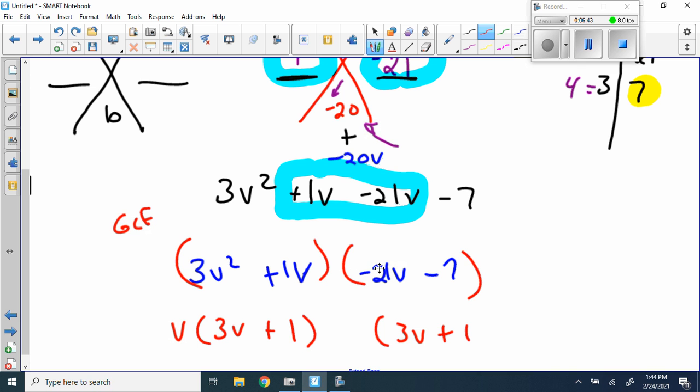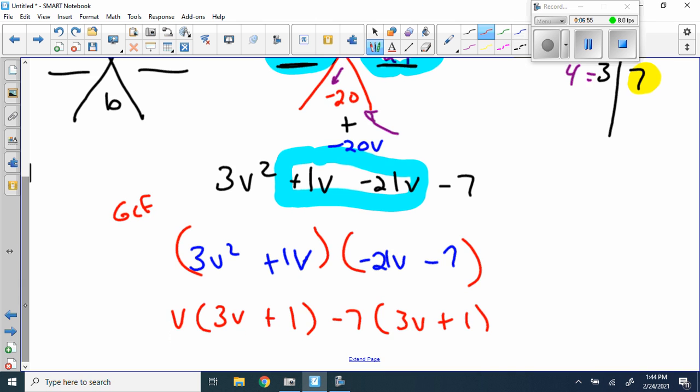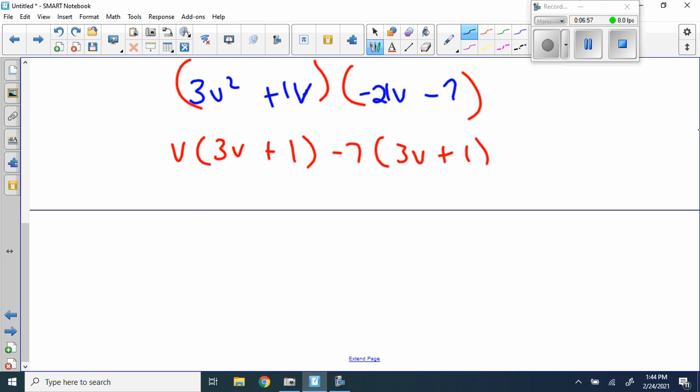Now, 3V plus 1. Now, negative 21, negative 21 divided by 3 gives me negative 7. Negative 7, right here, divided by negative 7 gives me a positive 1. So that follows suit. So here we are, V minus 7, 3V plus 1.